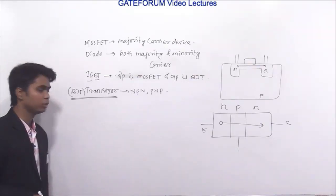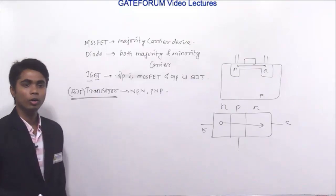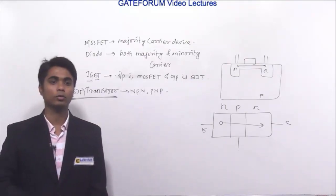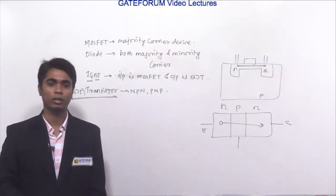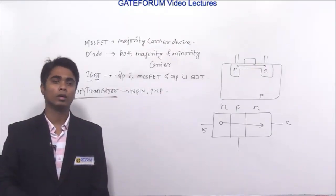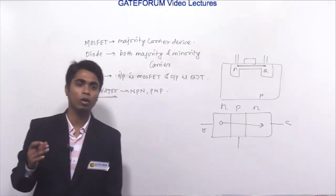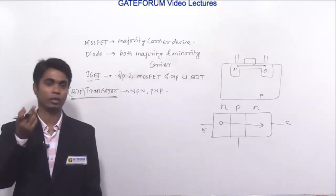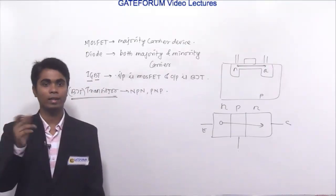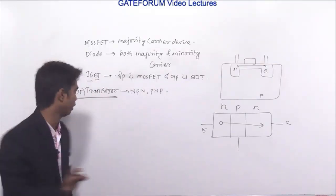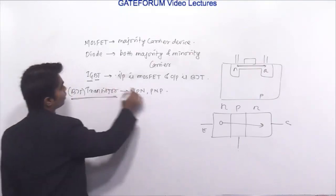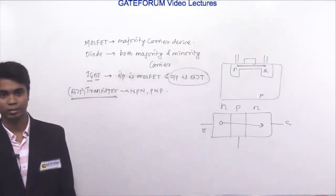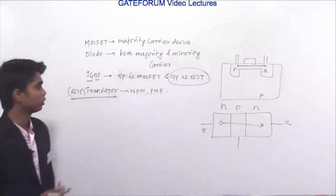By knowing this concept, only option D will be the right answer. Option A says all four are majority carrier — no. Option B says all four are minority carrier — no. Option C says IGBT and MOSFET are majority carrier — but IGBT contains BJT, which is not fully a majority carrier device. Therefore, option D is correct.